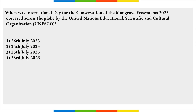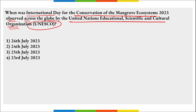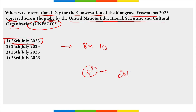When was the International Day for the Conservation of Mangrove Ecosystem 2023 observed by UNESCO? On 26th of July, UNESCO's International Day for the Conservation of the Mangrove Ecosystem was observed to raise awareness of the significance of the mangrove ecosystem. Also known as World Mangrove Day, 2023 marked the 8th edition of this day. The first ever edition was observed in 2016.